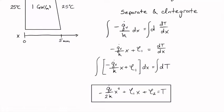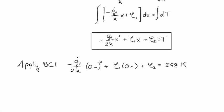Our next step is to apply the boundary conditions so that we can solve for the constants of integration, C1 and C2. We apply the first boundary condition by plugging in the constraints that at the far edge of the silicon panel, 0 meters, the temperature is 298 Kelvin.